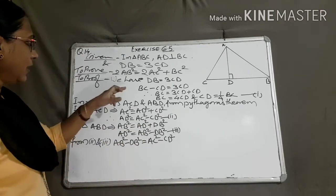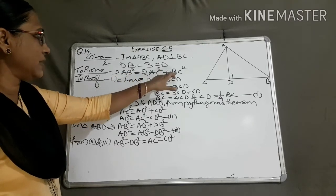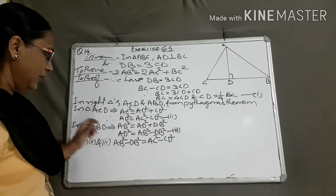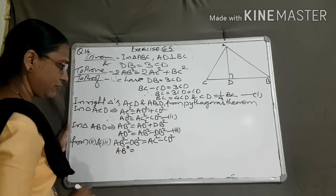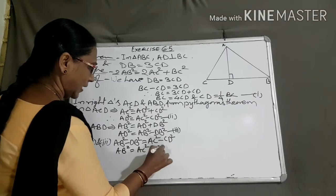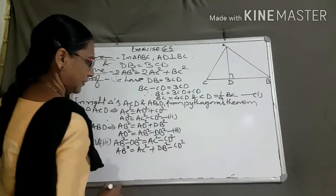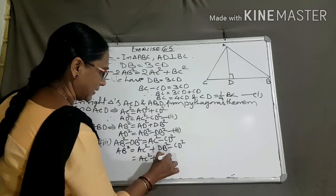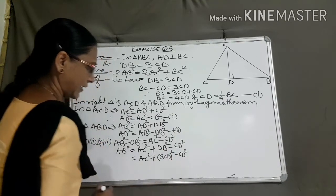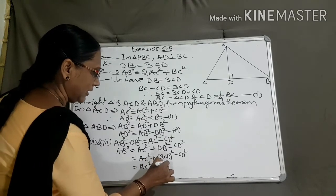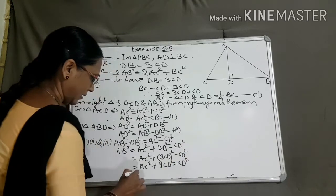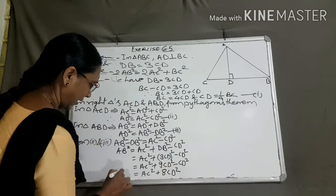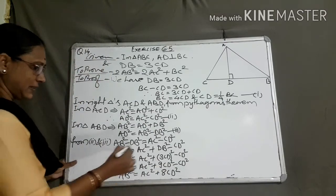Both AD square expressions are equal. Now substituting DB equal to thrice CD: AB square minus CD square equals AC square minus CD square. Therefore, AB square equal to AC square plus 9 CD square minus CD square, that is AC square plus 8 CD square. So AB square equal to AC square plus 8 CD square.